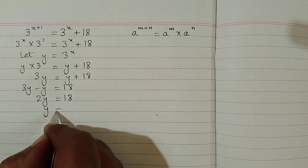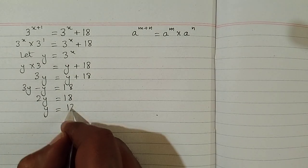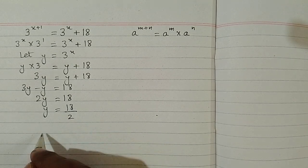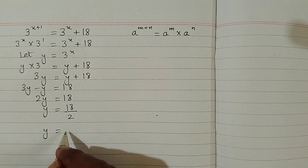Now dividing both sides by 2 we have y is equal to 18 upon 2 which is y is equal to 9.